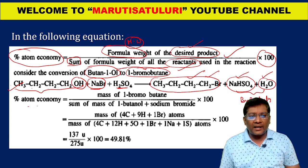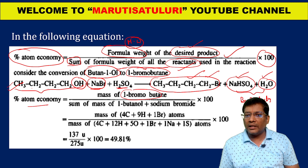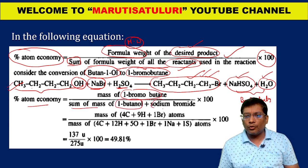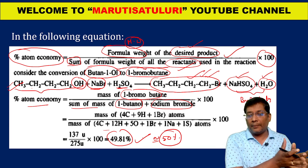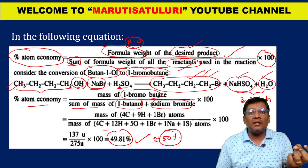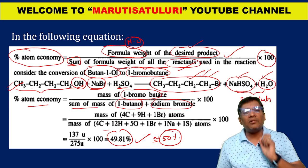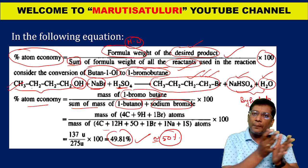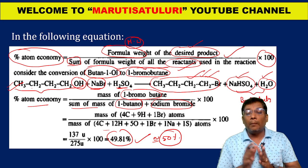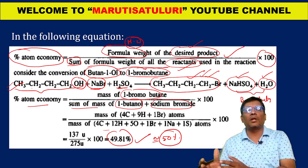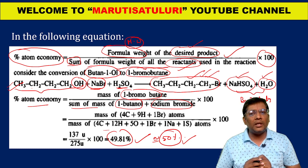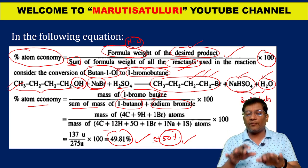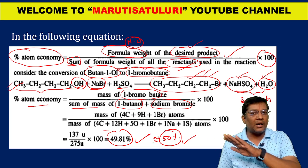Calculating percentage atom economy for this reaction: mass of 1-bromobutane (desired product) divided by the sum of masses of 1-butanol and sodium bromide, multiplied by 100, gives approximately 49.81% — approximately 50%. That means only 50% of atoms from the reactants are utilized to produce the desired product, 1-bromobutane. The remaining 50% of atoms are used to produce byproducts. Therefore, atom economy is only 50%, not 100%, and such reactions are not green reactions.